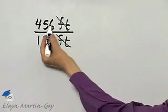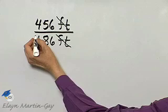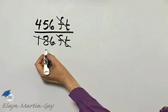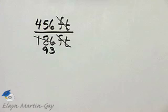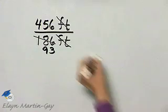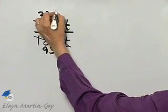Notice there is at least a common factor of 2. So if I divide 186 by 2, I have 93. If I divide 456 by 2, I have 228.